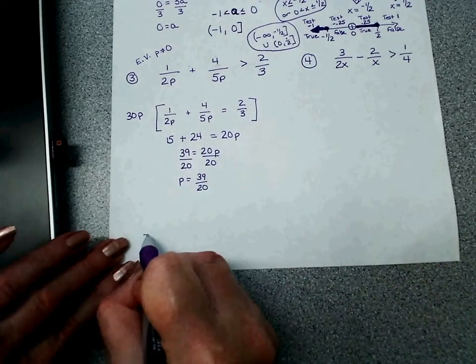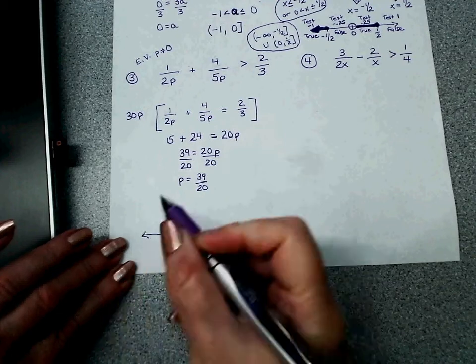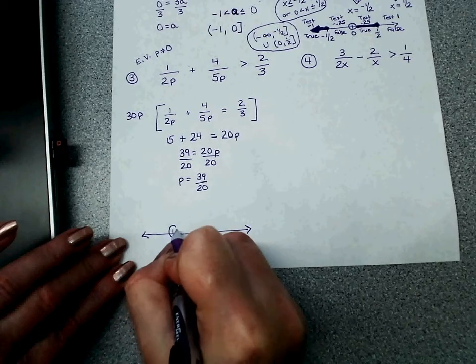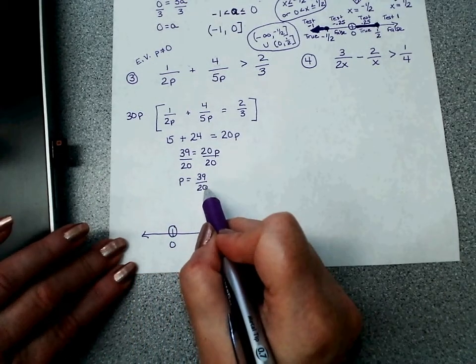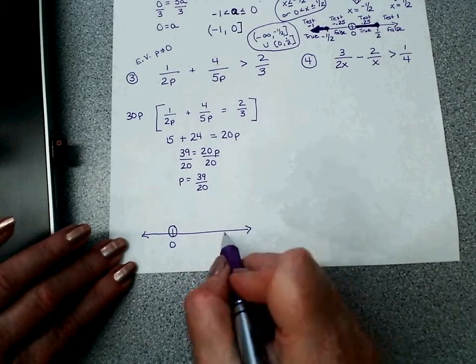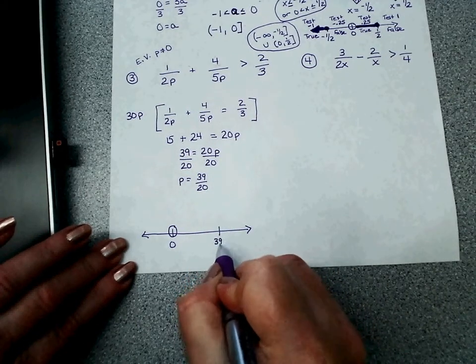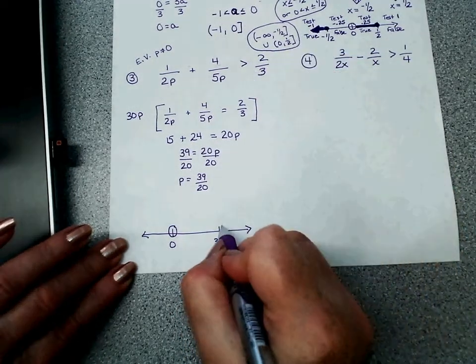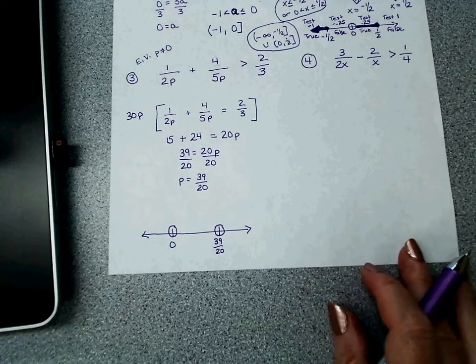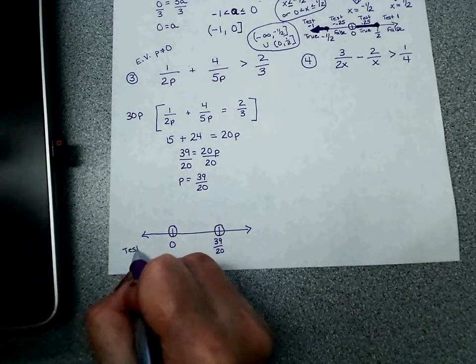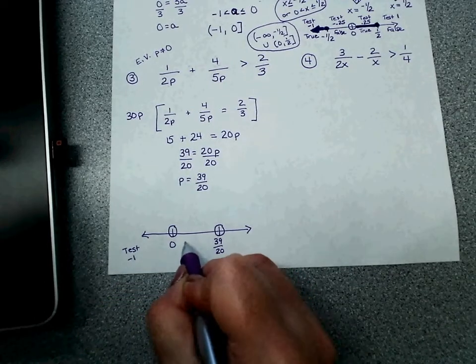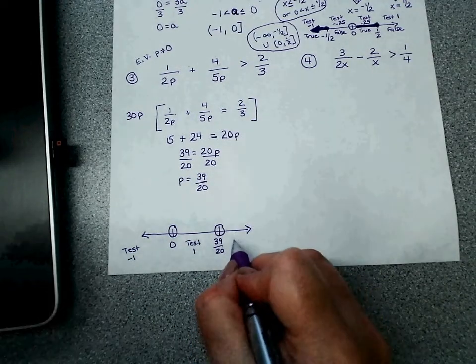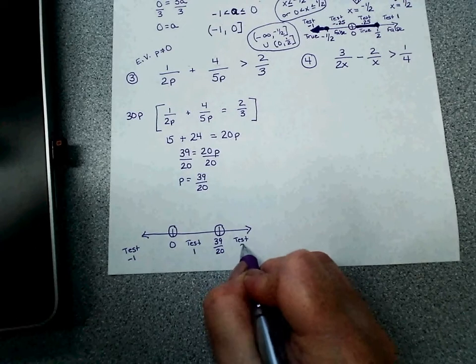Make me a number line. Put my excluded value, which is always open. Put my answer. This is really close to 2, so I'll just keep that in my brain. It's really close to 2. Look here, there is no underbar, so it is open as well. Now I've got to test negative 1. I've got to test in here. I can test positive 1 because that's really close to 2. 40 over 20 is 2. And out here I can actually test 2 because it's on the other side.